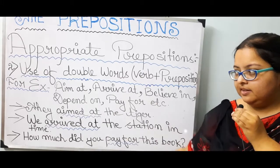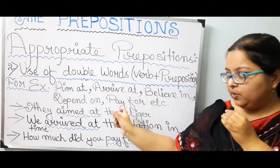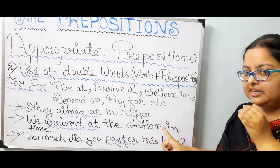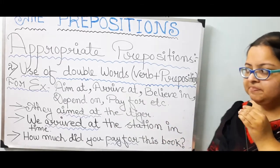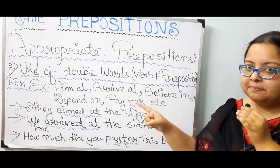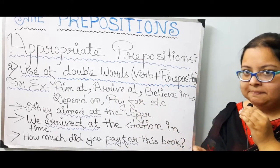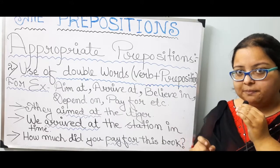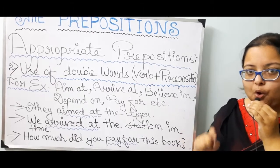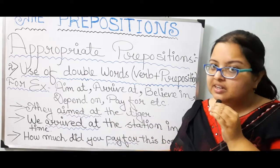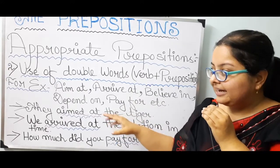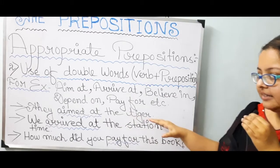First example: they aimed at the tiger. 'Aim at' — since this activity took place in the past, we use 'aimed'. The first form is aim, second form (past) is aimed, and third form (past participle) is also aimed. Here we use the second form: they aimed at the tiger.